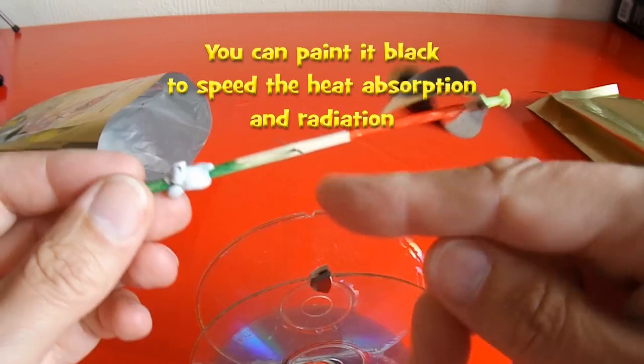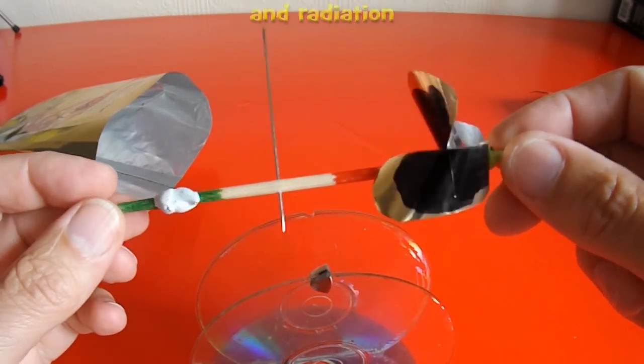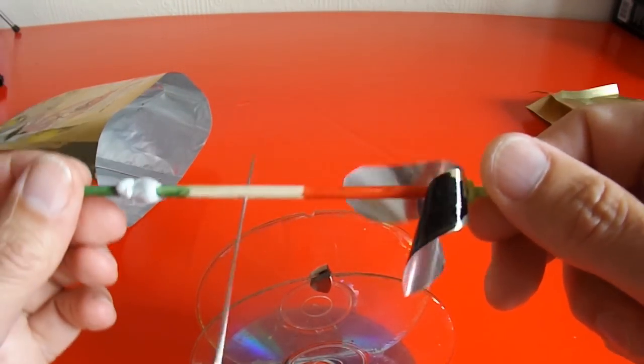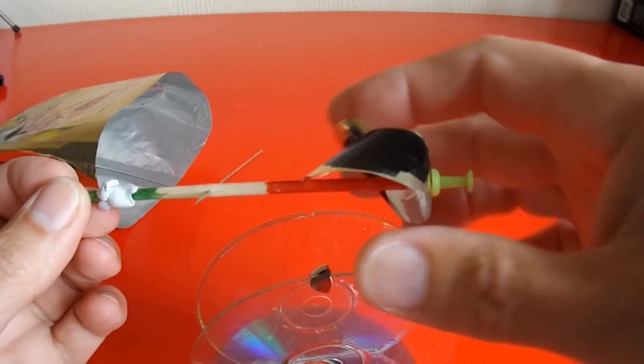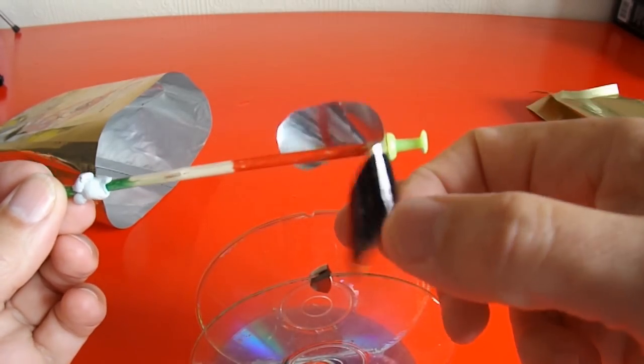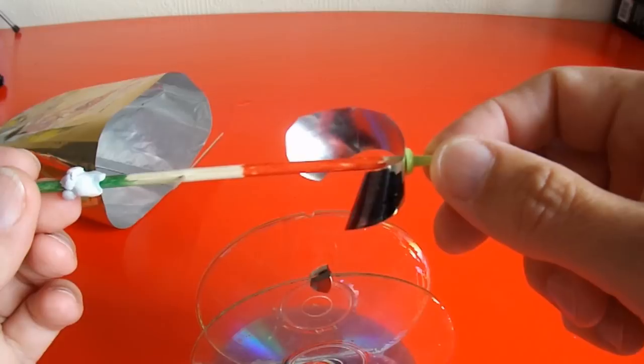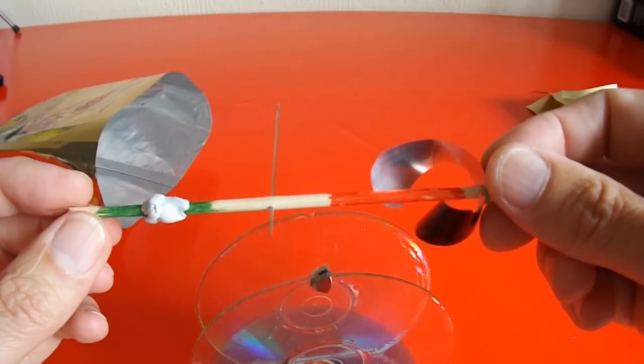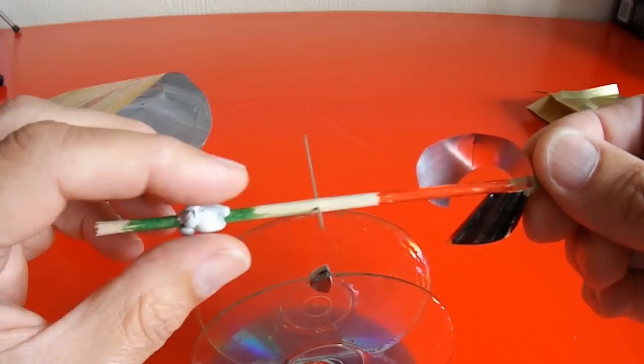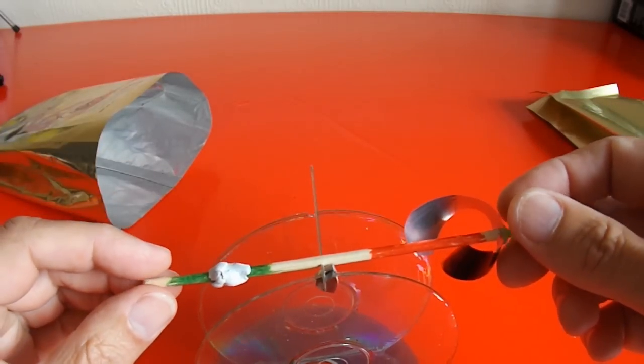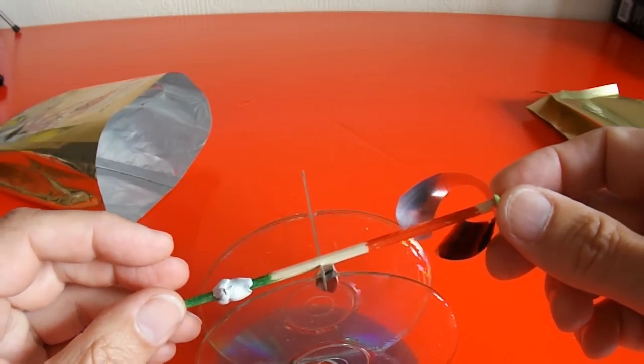The arm itself is just a barbecue skewer or a piece of bamboo. The plastic is just attached to the top, in this case with a pin, you could hot glue it or any sort of glue. And to get the balance in the right place, I've got a bit of blue tack there that I moved up and down until it actually balanced about right.